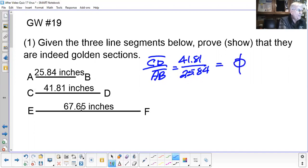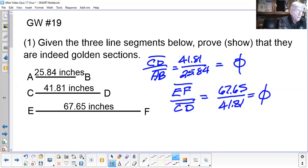All right, let's do the same thing with the next two segments. Take the longer one, EF, let's divide it by the length CD and see if we also get phi. So if you take 67.65 and I divide it by 41.81, I get 1.6180339, which of course rounds to 3.4, so yes I do get phi.